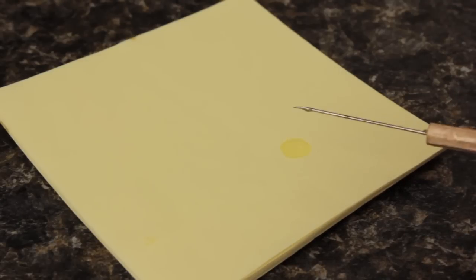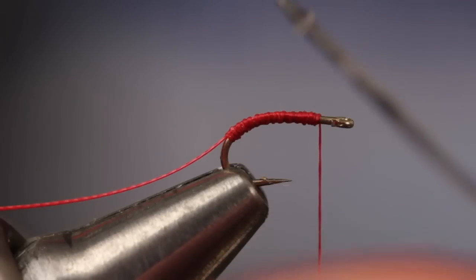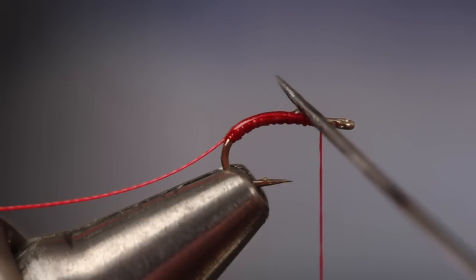To increase the fly's durability, use your bodkin to scoop up just the smallest amount of zap-a-gap and apply a very light coat to the thread wraps.